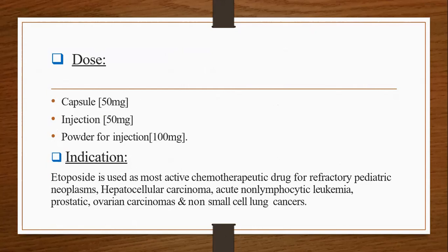Doses: capsules and injections are available in 50 mg, while powder for injection is available in 100 mg strength. Indication: this drug is used as the most active chemotherapeutic drug for refractory pediatric neoplasms, hepatocellular carcinomas, acute non-lymphatic leukemias, prostatic and ovarian carcinomas, and non-small cell lung carcinomas.